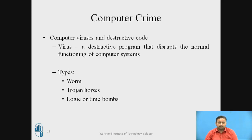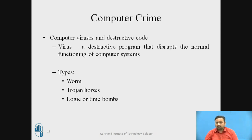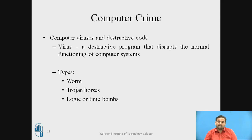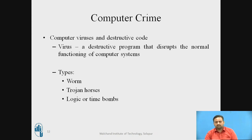A major role is played by computer viruses and destructive code. Similar to the biological term, a virus in a computer system spreads widely. It is a small disruptive program that disrupts the normal functioning of a computer system and spreads across networks very rapidly. Systems containing it can collapse. Types include the worm, trojan horses, and logic or time bomb. Different types of viruses have different roles — some may be more harmful than others.